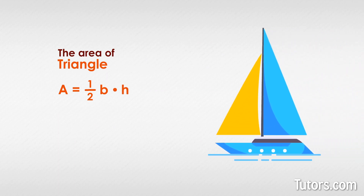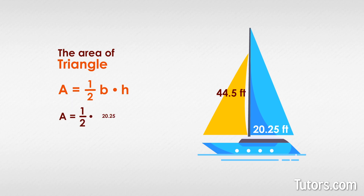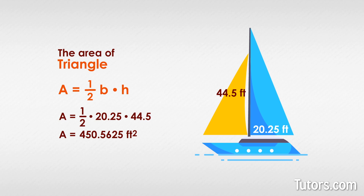Here is a right triangle — a sail from a 45-foot Morgan sailboat — with a 20.25-foot base and a height of 44.5 feet. What is its area? Let's plug the given numbers into our formula and figure it out. For convenience in multiplying, you can change the fractions to decimals. The answer we get is a equals 450.5625 feet squared, or square feet.